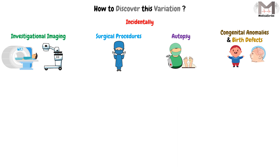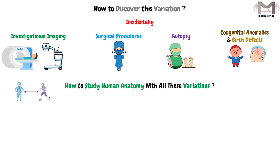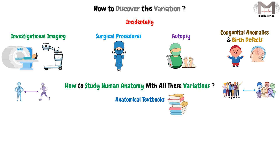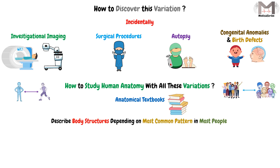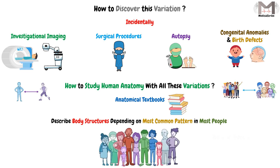A question may come to mind: how do we study human anatomy with all these variations that differ from person to person and from one regional group to another? The answer is that anatomical textbooks agree that body structures are described based on the most common pattern found in most people, while also noting when a variation may be found in some individuals.